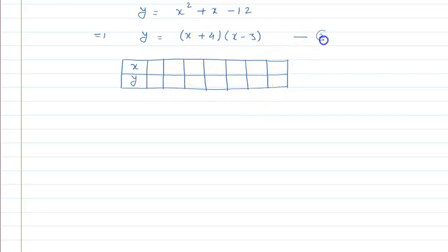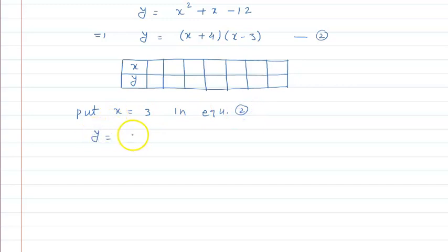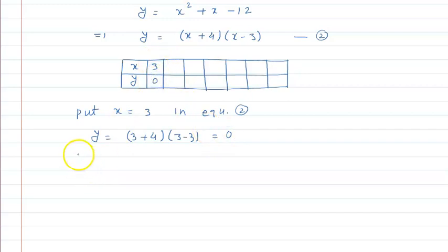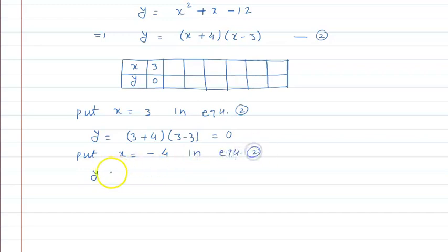Put x is equal to 3 in equation 2: y is equal to (3 + 4)(3 - 3) is equal to finally 0. So when x = 3, y = 0. Now put x is equal to minus 4: y is equal to (minus 4 plus 4)(minus 4 minus 3) — the first bracket gives 0, so the final answer is 0. So when x = minus 4, y = 0.